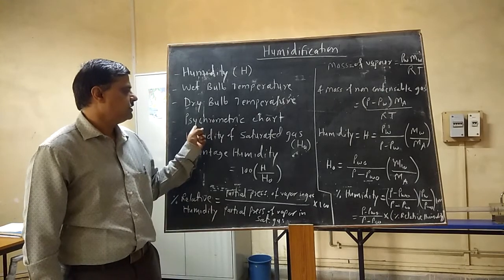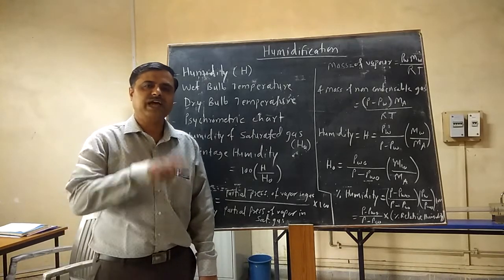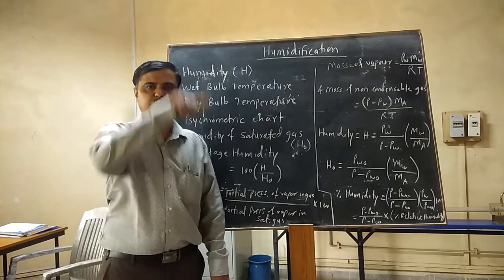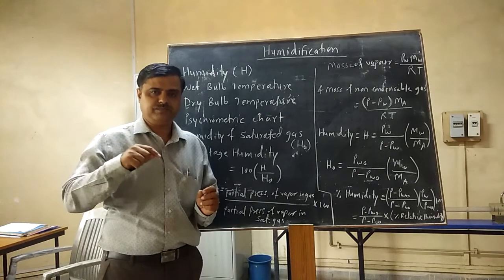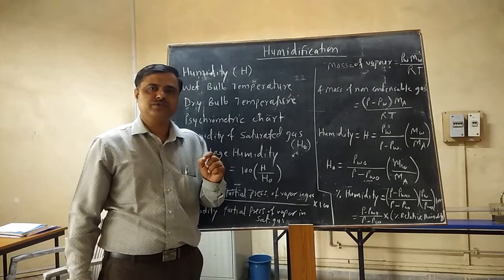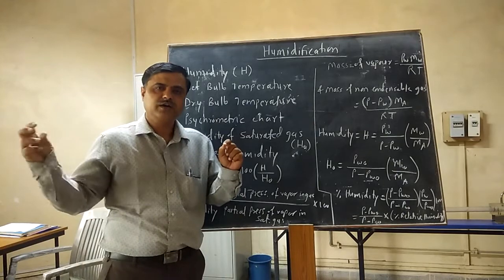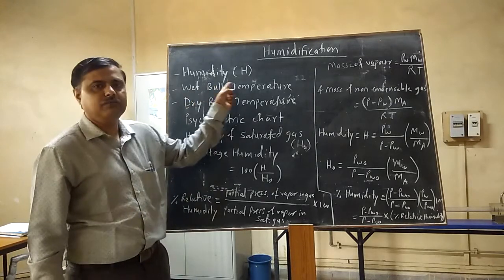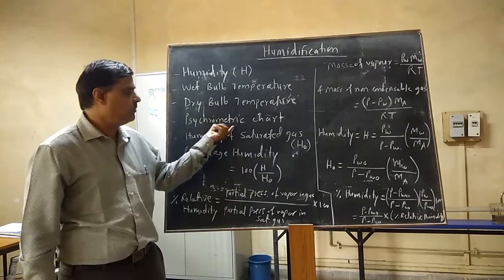By using these two temperatures we can measure the humidity, using the psychometric chart. In the psychometric chart, vertical lines are provided for the dry bulb temperature, and different curves are provided depending upon the percentage saturation. You find the intersection point of dry bulb temperature and wet bulb temperature, trace it to the right side, and on the y-axis you get the humidity.